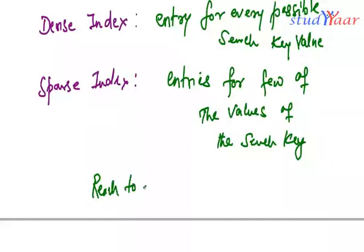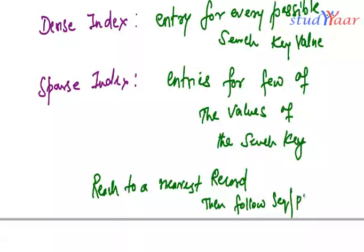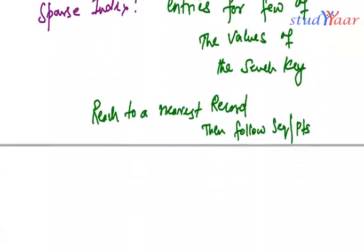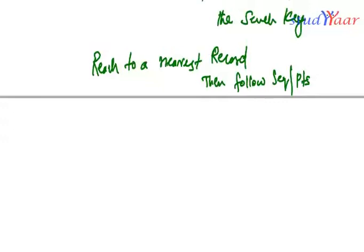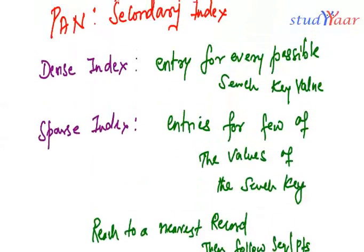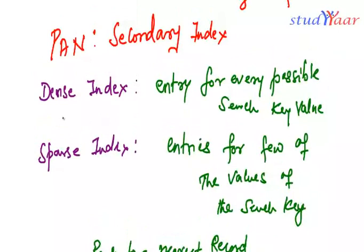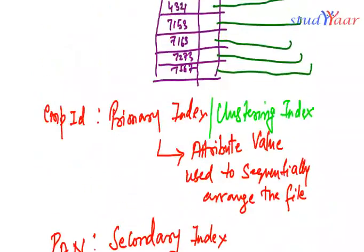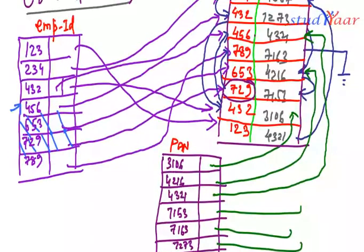So after finding a nearer record, I follow the chain and find my desired record. You reach to a nearest record and then follow sequence or pointers. So that is how you use a sparse index.